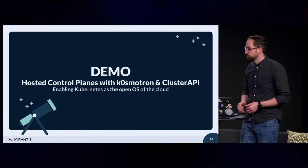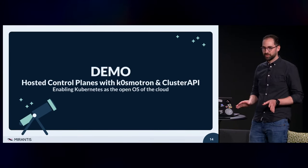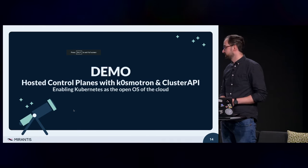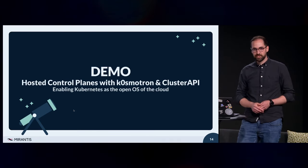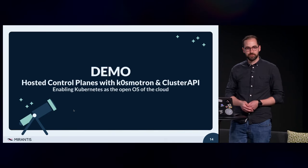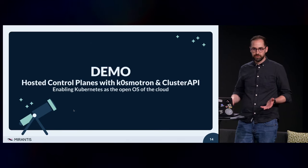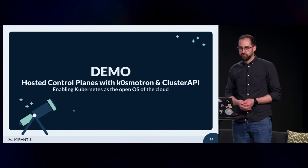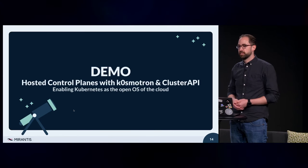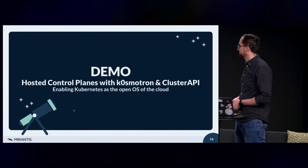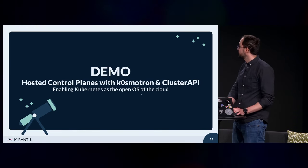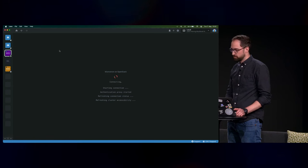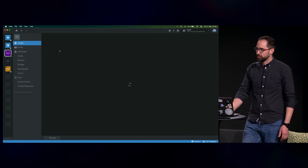Let's jump into a very quick demo — it's really very, very simple. What we currently see is Kubernetes becoming the open operating system of the cloud, because it is running almost every service — whether directly running OpenStack with the ability to create virtual machines, or running KubeVirt, for example. In the demo, I will just create a very simple control plane. I'll show it using Lens because it's much simpler than just using kubectl, and you will see that we can create control planes very easily.